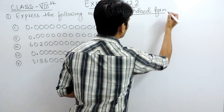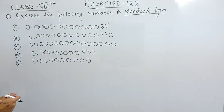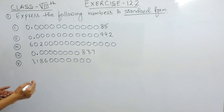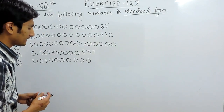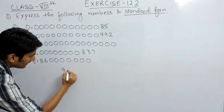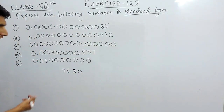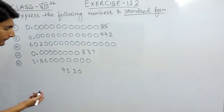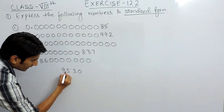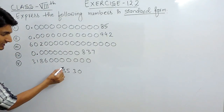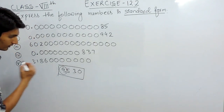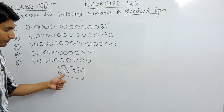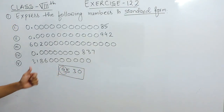Let's first understand what standard form is. Standard form is basically a representation of a number where the decimal is placed so that on the left hand side of the decimal there is only one digit. For example, if I am writing 9530, you have to put the decimal such that only one digit is on the left. So 9.530 is in standard form.